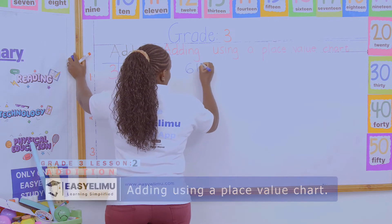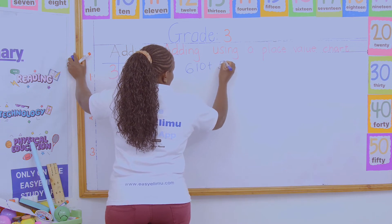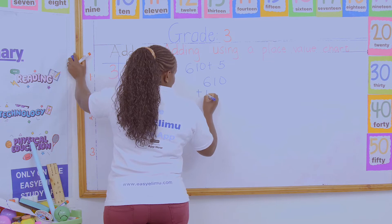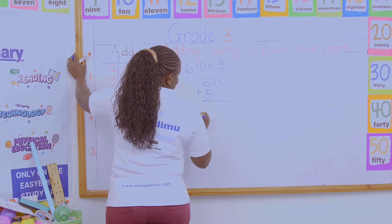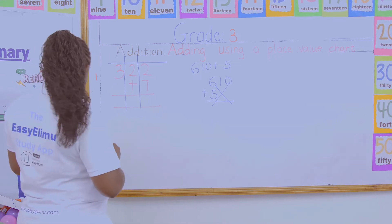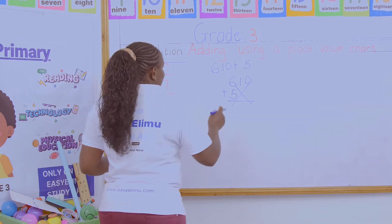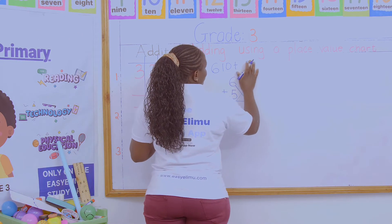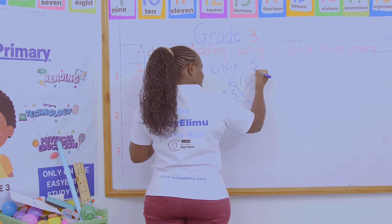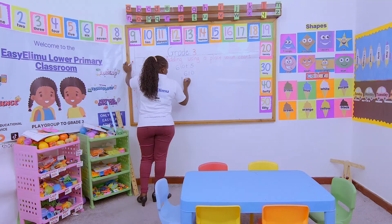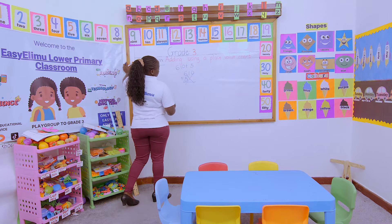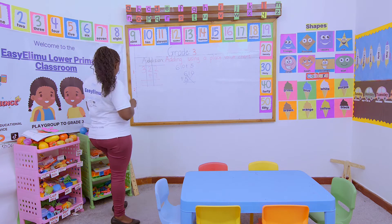What happens here? First, put the numbers in their correct places. Understand where each number belongs for you to add. For example, if this number were 610 plus 5, some of you will write it as 610 plus 5 — just like that. Why? Because they don't understand the position of that number 5.